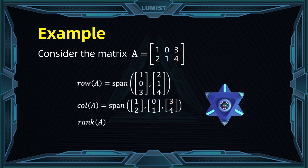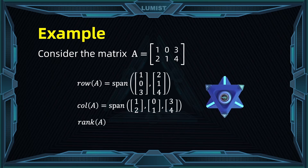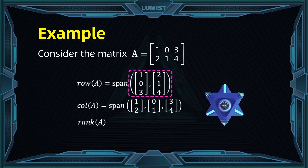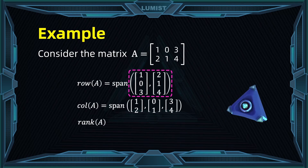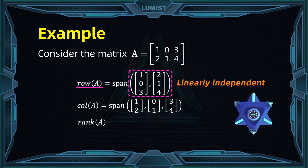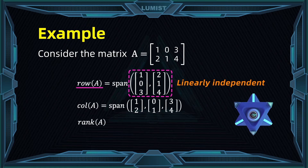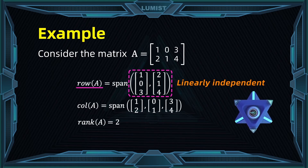As for its rank, first note from the row space that the two vectors [1, 0, 3] and [2, 1, 4] are linearly independent and they span the subspace row of A. Therefore they form a basis for row of A. In conclusion, the rank of A is equal to 2.